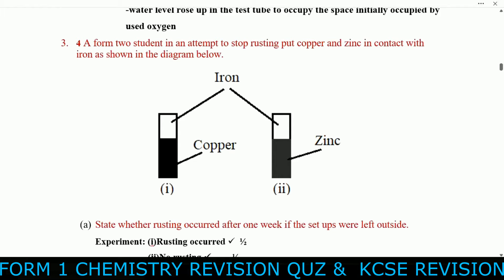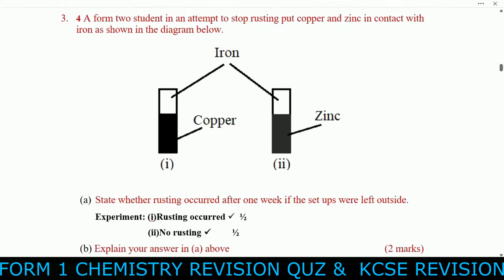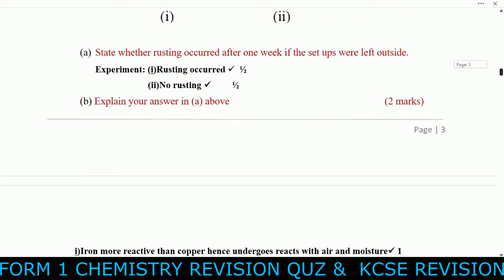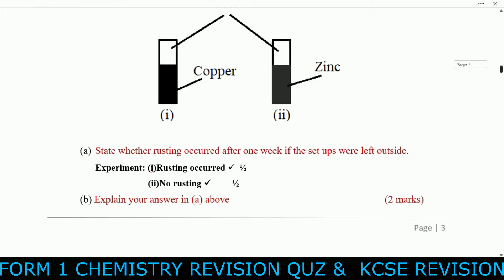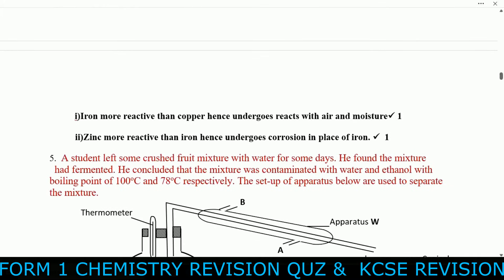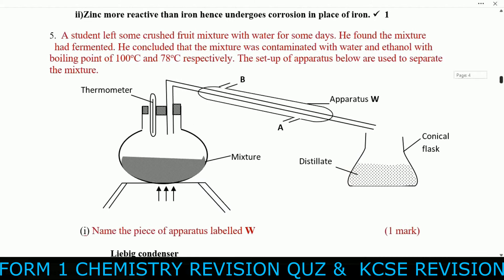Question three continued: A form two student, in an attempt to stop rusting, put copper and zinc in contact with iron. State whether rusting occurred after one week. Experiment one (copper with iron): rusting occurred. Experiment two (zinc with iron): no rusting. Explanation — iron is more reactive than copper, so it reacts with air. With zinc, zinc undergoes corrosion in place of iron.